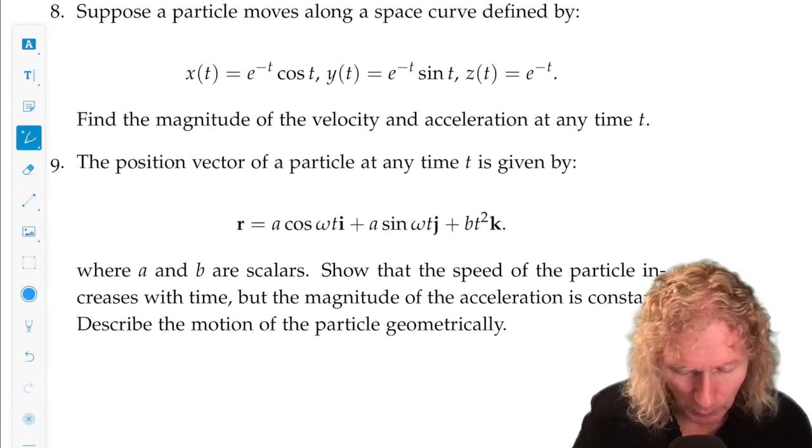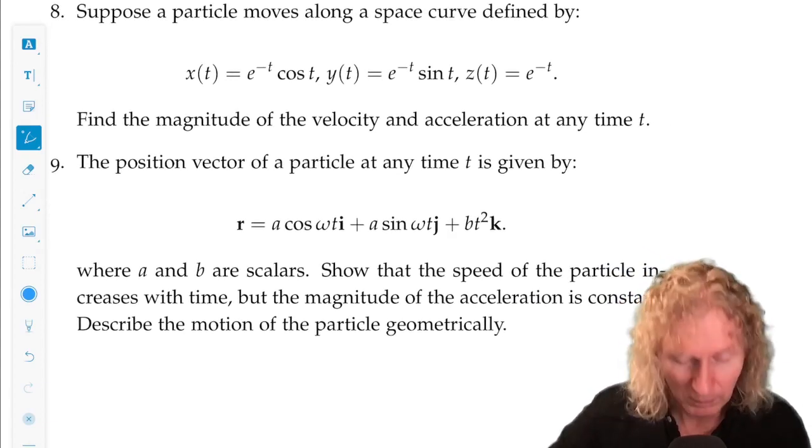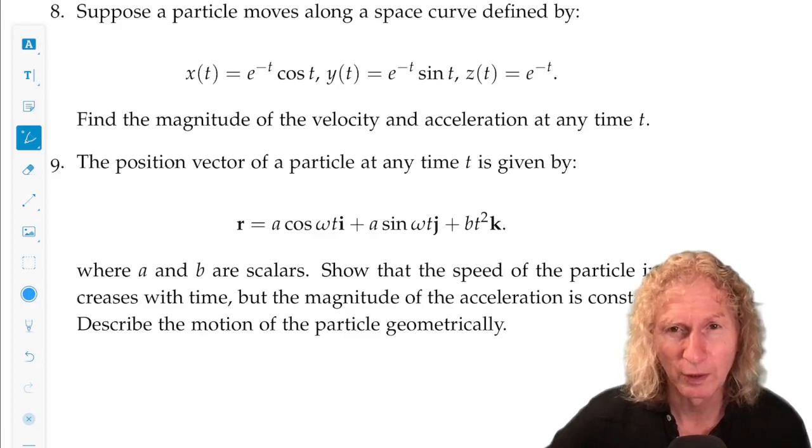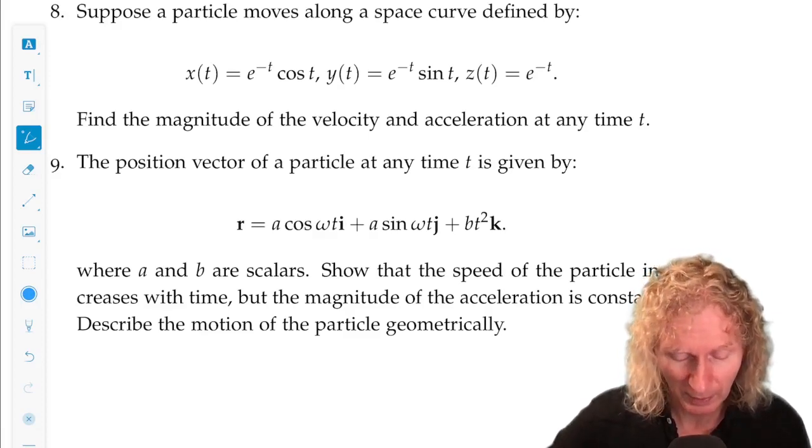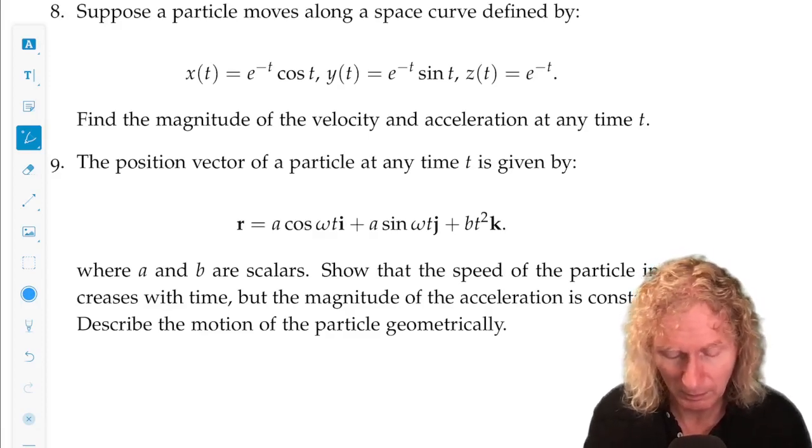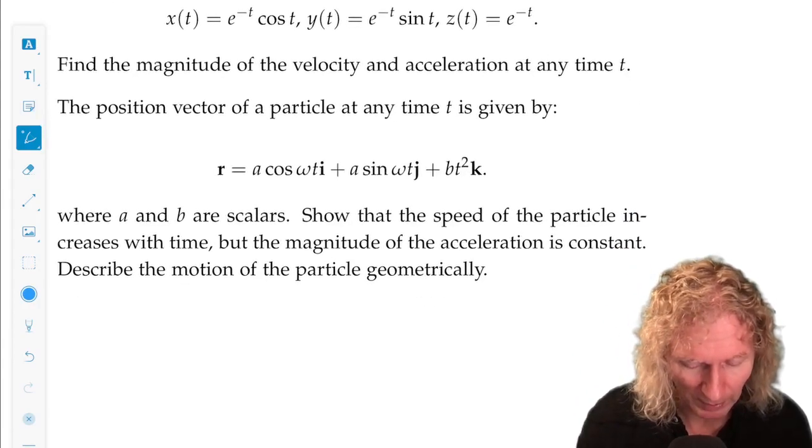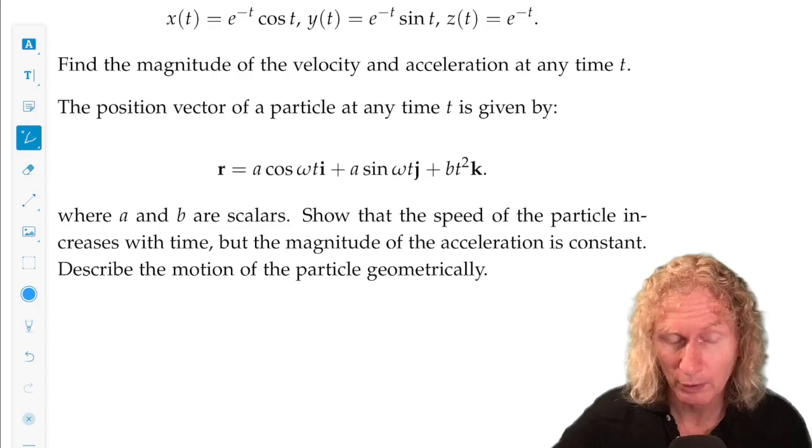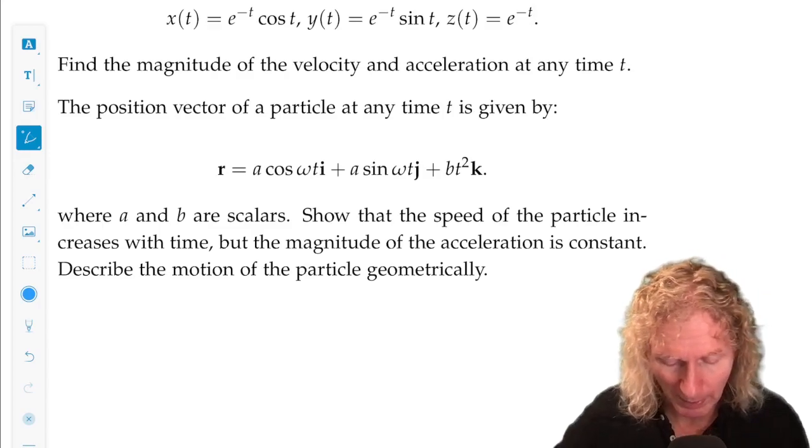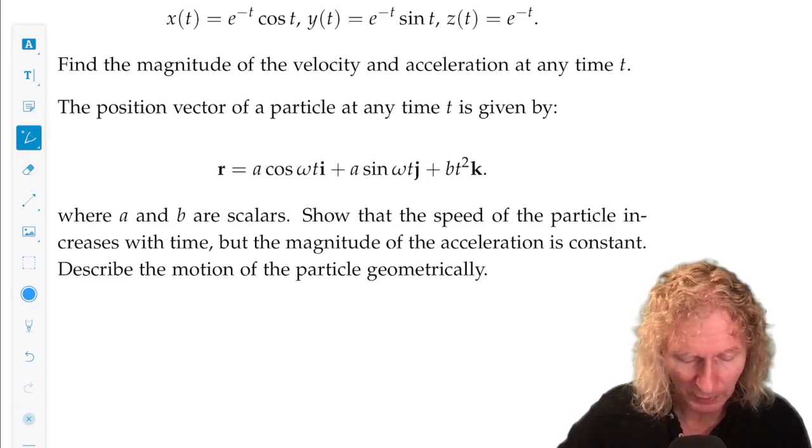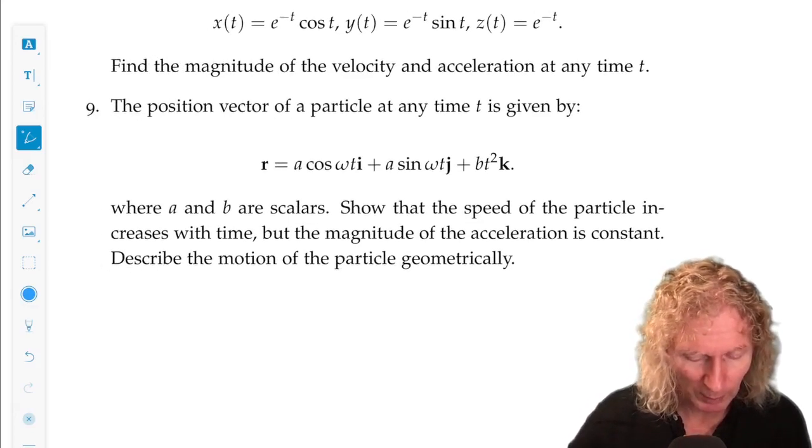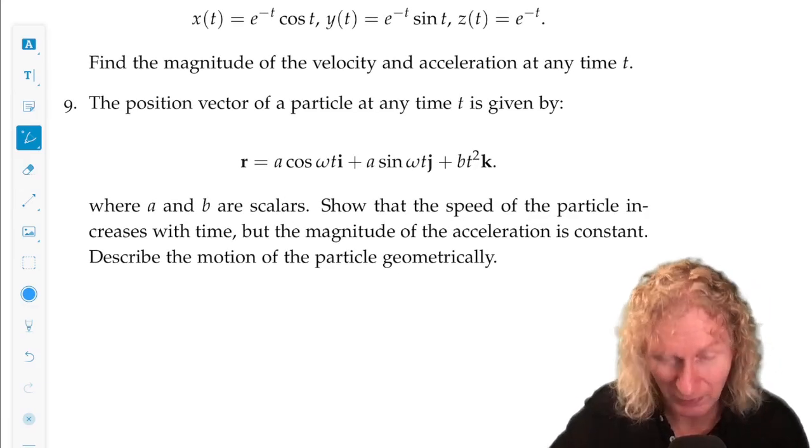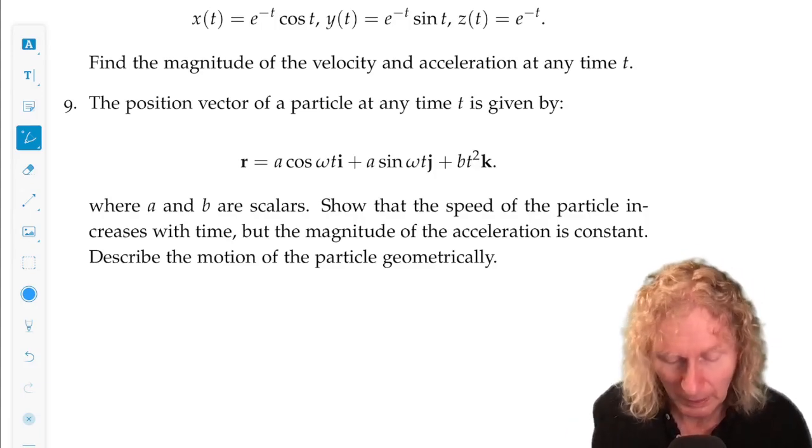And then in nine, I give you another space curve. You might ask yourself what that is. It's a helix. And I'll leave it to you to figure that out, what that means. Show that the speed of the particle increases with time, but the magnitude of the acceleration is constant. And then describe the motion of the particle geometrically. I just kind of gave that away.